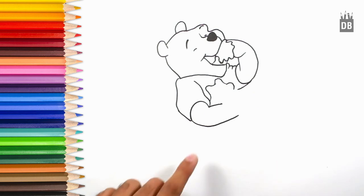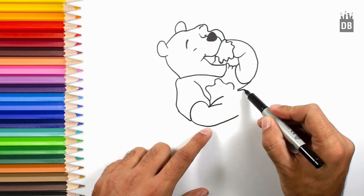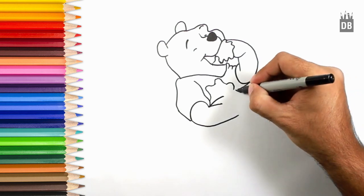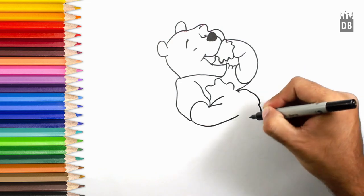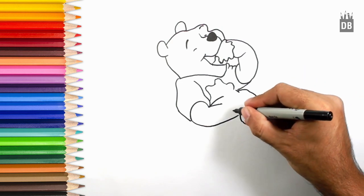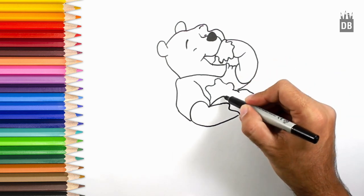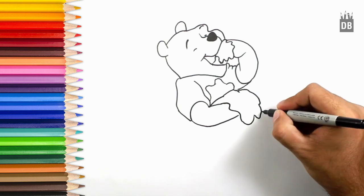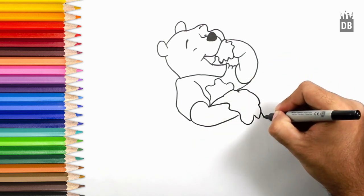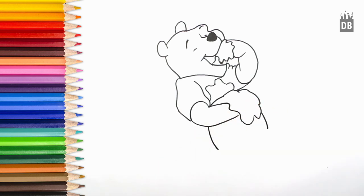And from here, the jar line. The jar line will end over here, and the honey is coming out of it. Like this. Okay, so the jar line will come nearby his feet.